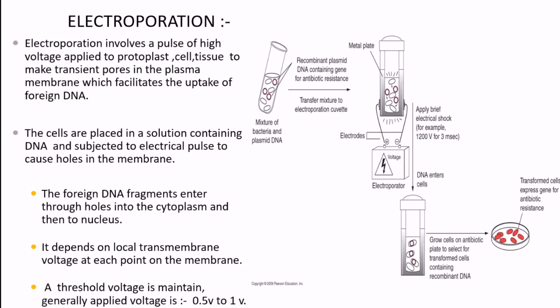The foreign DNA fragments enter through holes into the cytoplasm and then into the nucleus. This happens once voltage is applied, depending on the local transmembrane voltage at each point on the membrane. After the voltage is discharged and temperature is changed to lower temperature, new cell wall synthesis occurs. To select recombinants from non-recombinants, you grow cells with specific antibiotic resistance.